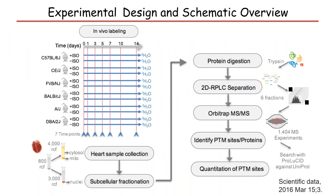This is the experimental design for data generation. The dataset used in this study is taken from a previously published dataset in Scientific Data 2016. We treated six different genetic mouse strains with isoproterenol for 14 days. We collected heart cell lysate sequentially at seven time points — day 0 for control only, and days 1, 3, 5, 7, 10, and 14 for both control and ISO — to perform subcellular fractionation. Proteins are extracted and digested with trypsin, then we perform two-dimensional RPLC separation. We use Orbitrap MS/MS and spectra are searched with ProLucid against the UniProt database to identify proteins and PTMs. Eventually, PTM sites are quantified.